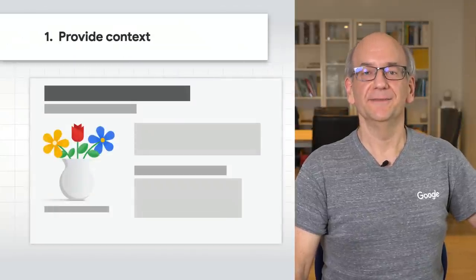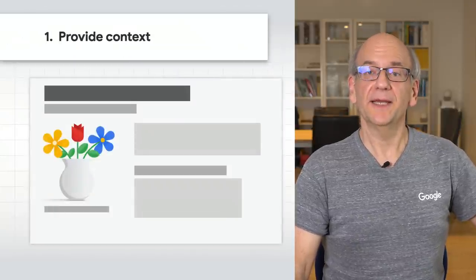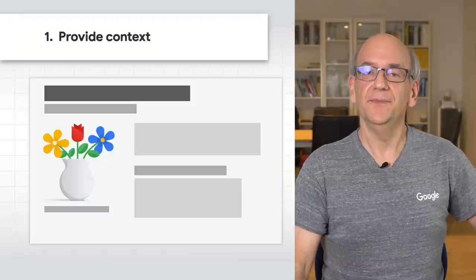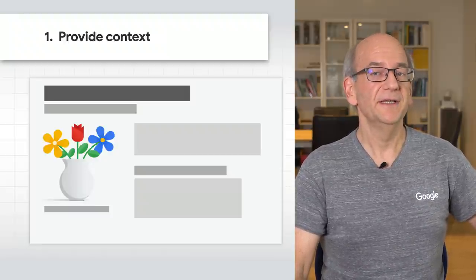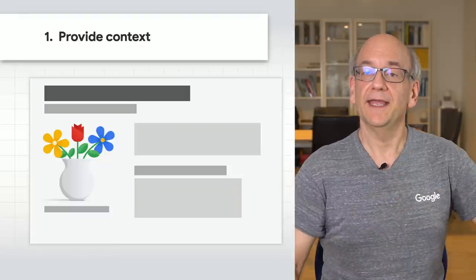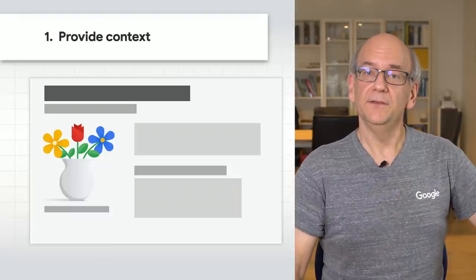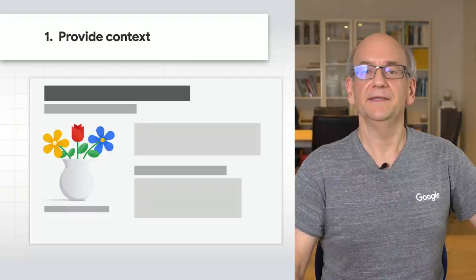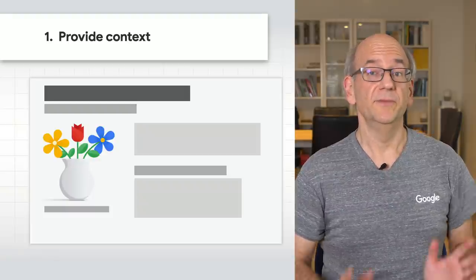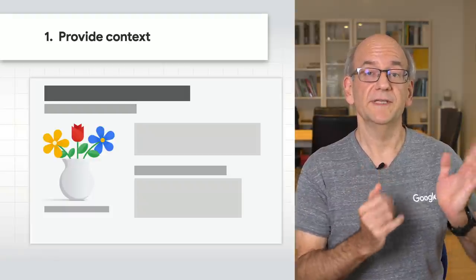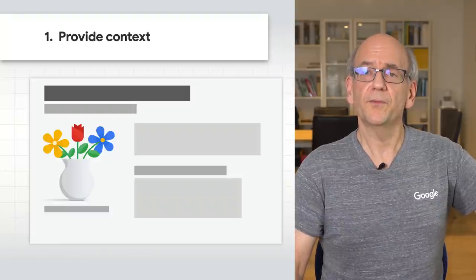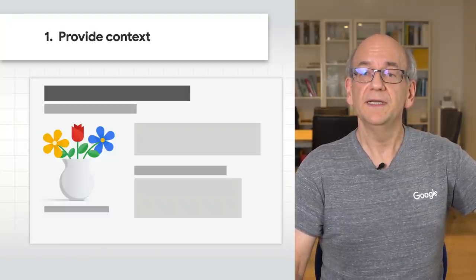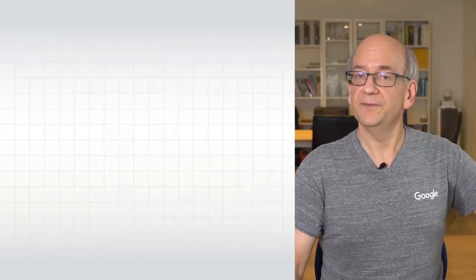All right, let's take a look at our recommendations for images. Start by providing good context. Make sure that visual content is relevant to the topic of the page. We suggest using images where they add value to the page. Use appropriate page titles and headings to provide context. Remember your users and how they might be searching for your content visually — what are the words and phrases they might use, and are you using them on the right pages?